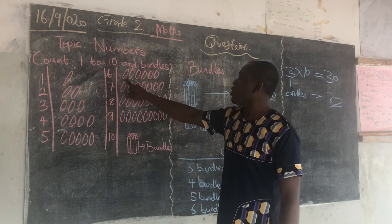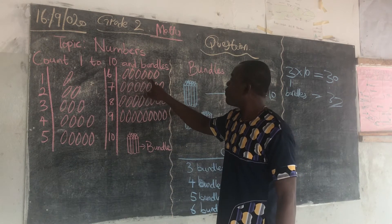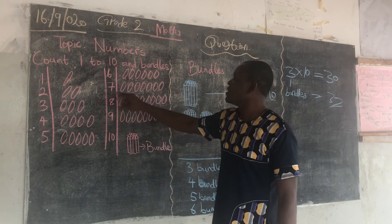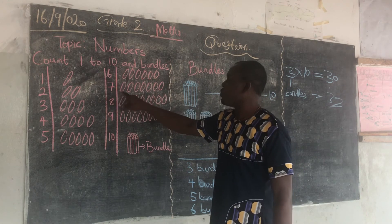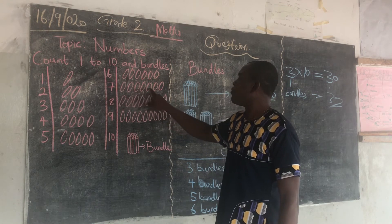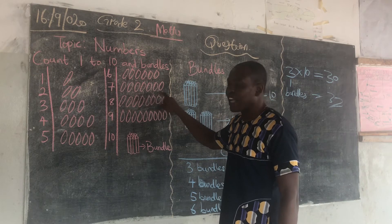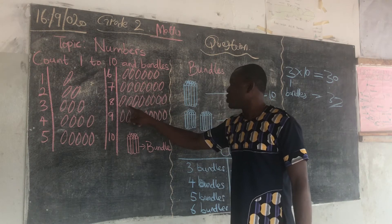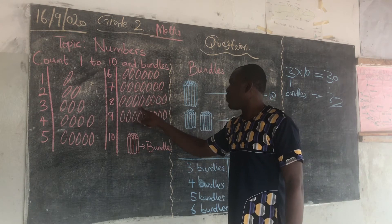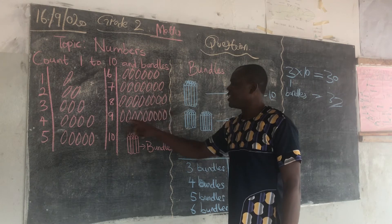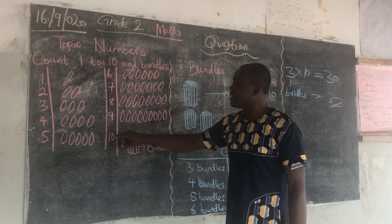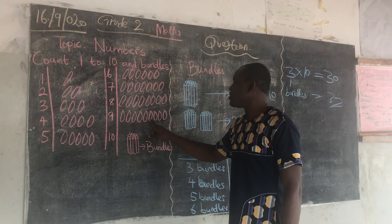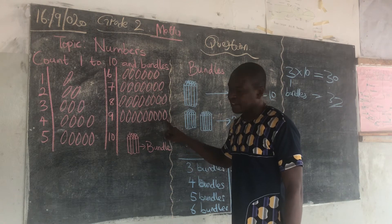6 — 1, 2, 3, 4, 5, 6 — 6 pencils. 7 — 1, 2, 3, 4, 5, 6, 7. 8 — 1, 2, 3, 4, 5, 6, 7, 8. Then 9 — 1, 2, 3, 4, 5, 6, 7, 8, 9.